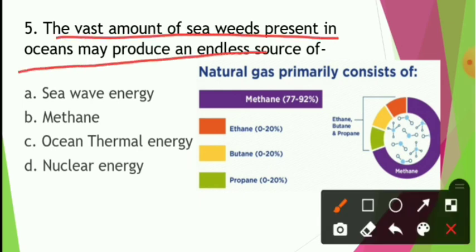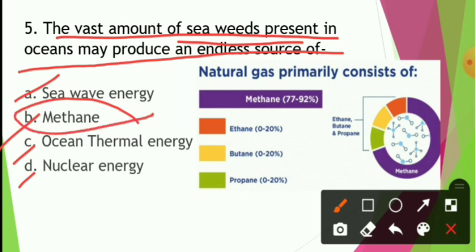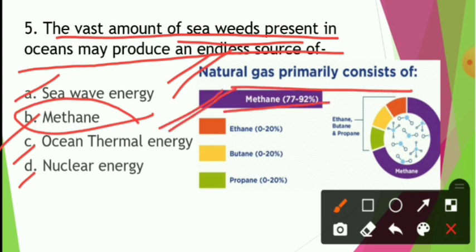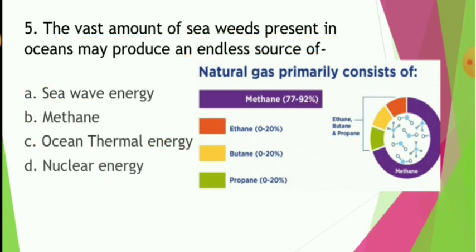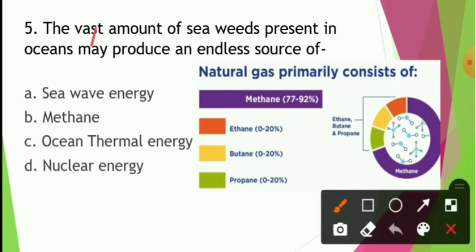Moving to the next question: The vast amount of seaweeds present in the ocean produces which energy source? Options are sea wave energy, methane, ocean thermal energy, or nuclear energy. Seaweeds primarily produce methane. This is related to another question about which gas is primarily produced — methane. One question to note: which gas is used in LPG? Answer that in the comments section.